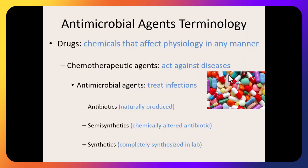Starting with some definitions: a drug is a very generic term — any chemical that affects physiology, how your body is working, in any manner. This includes over-the-counter and illegal drugs. What we really want to focus on are chemotherapeutic agents, which are drugs that act against a certain disease.